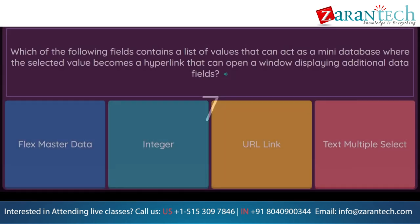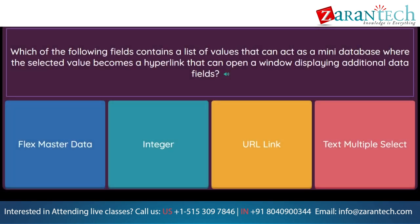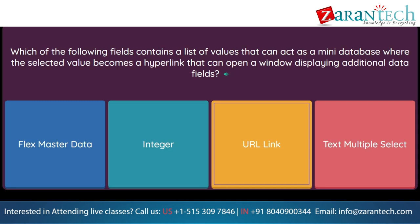Question: Which of the following fields contains a list of values that can act as a mini database where the selected value becomes a hyperlink that can open a window displaying additional data fields? Option 1: flex master data. Option 2: integer. Option 3: URL link. Option 4: text multiple select.